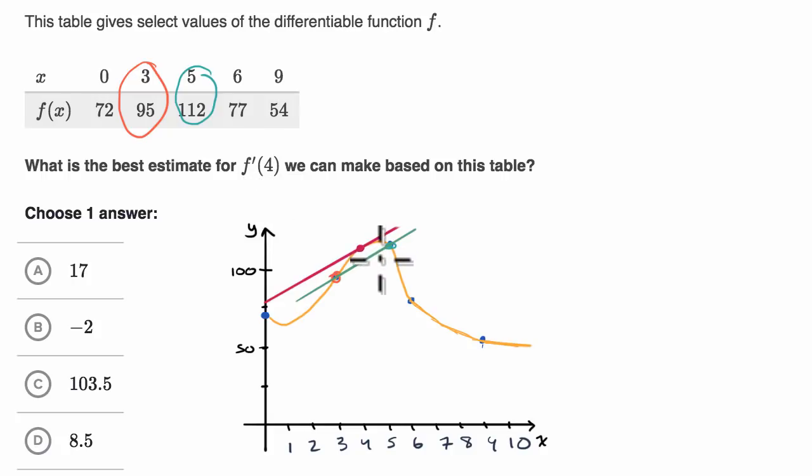Do we know that it's a good estimate? Do we know that it's even close? No, we don't know for sure, but that would be the best estimate. It would be better than trying to take the average rate of change between when x equals three and x equals six, or between when x equals zero and x equals nine. These are pretty close around four. And so let's do that. Let's find the average rate of change between when x goes from three to five.